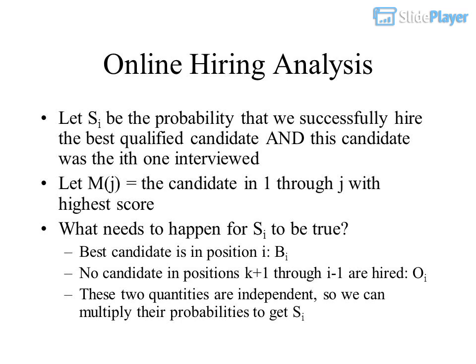What needs to happen for C to be true? The best candidate must be in position i, and no candidate in positions K+1 through i-1 is hired. These two quantities are independent, so we can multiply their probabilities to get C.